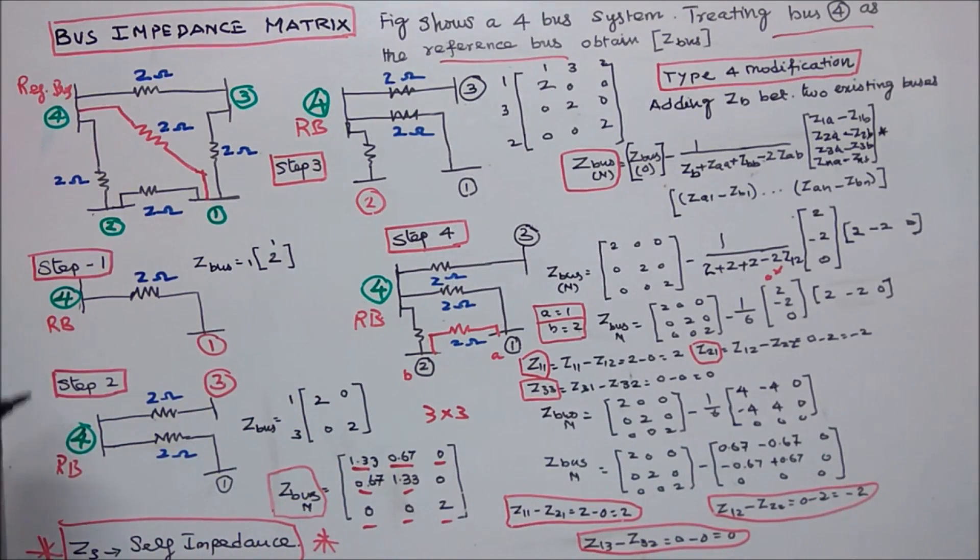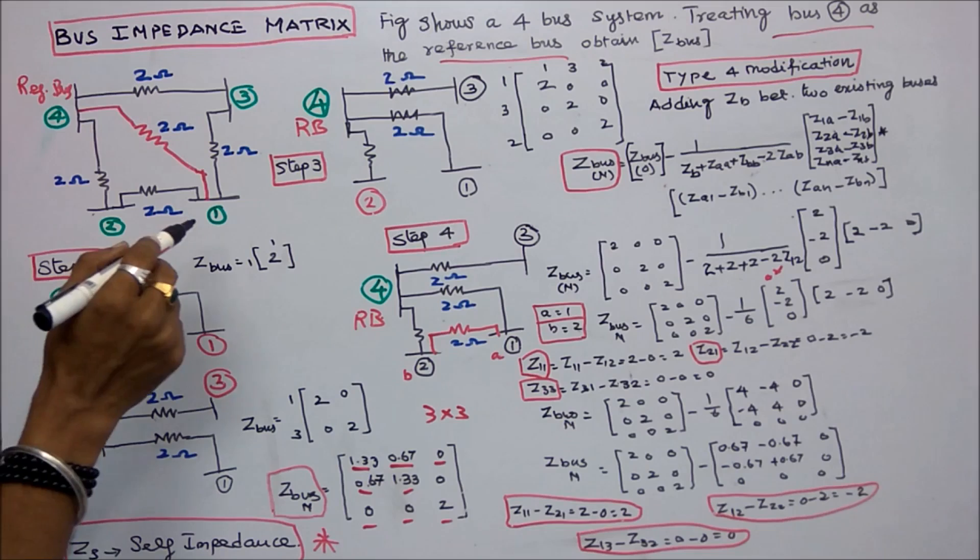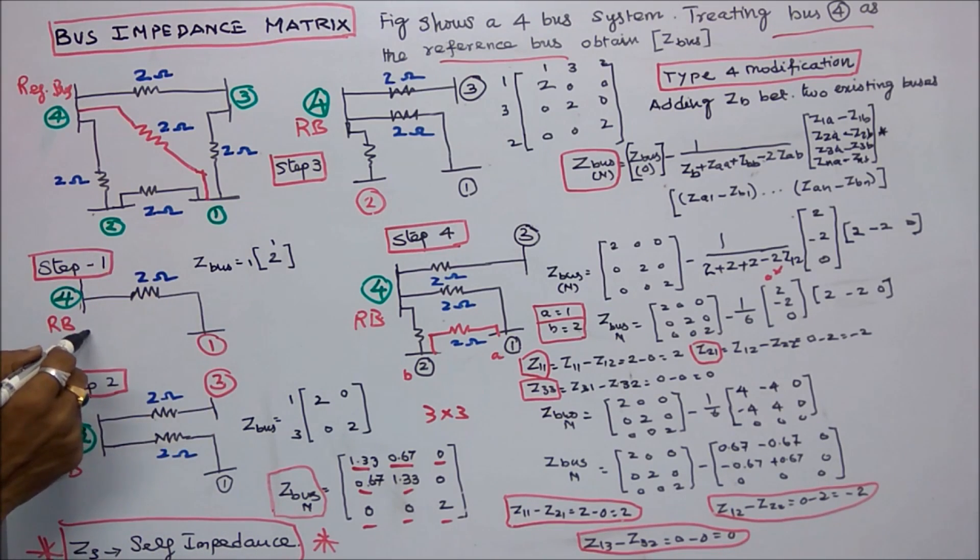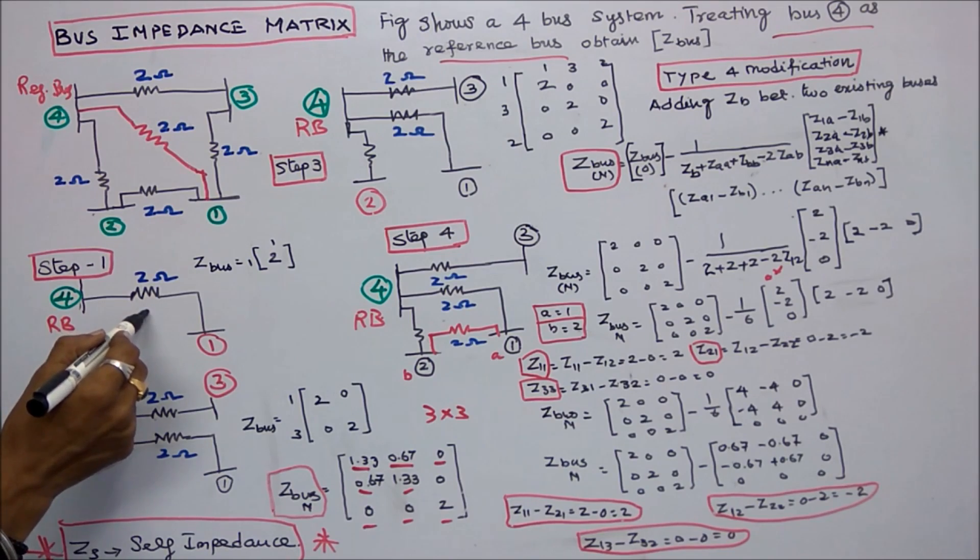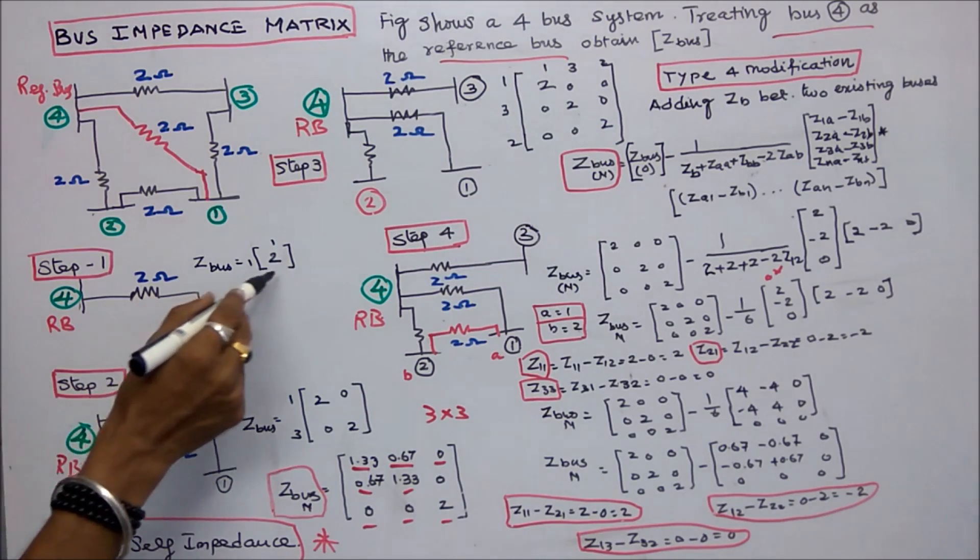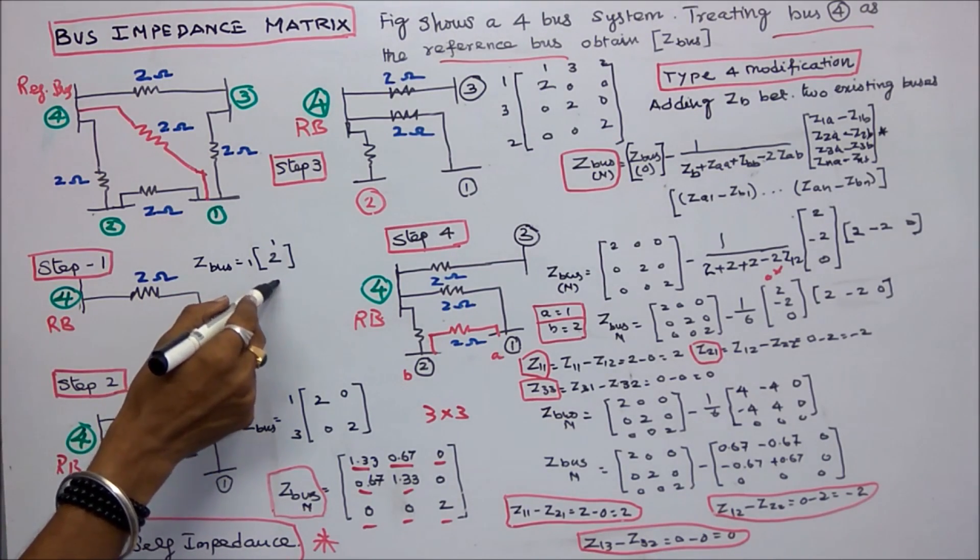Step 1: 4 is the reference bus. I am adding bus 1 to the reference bus. The impedance is 2 ohms. Now I got a 1 by 1 matrix. Z bus is equal to Z11 is equal to 2.